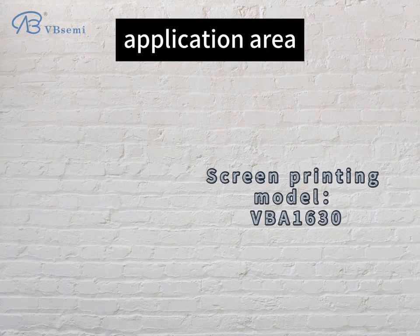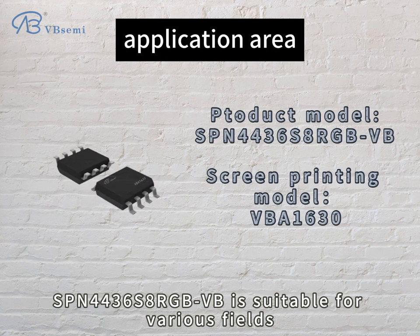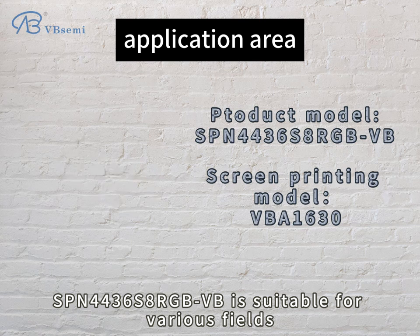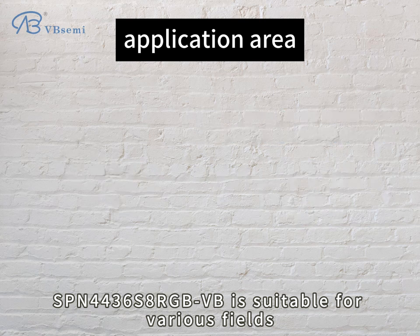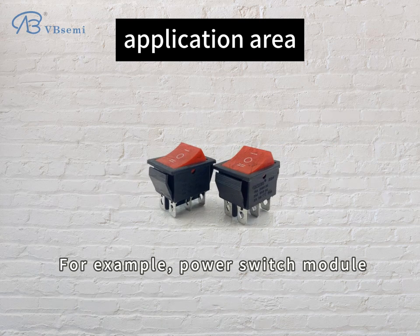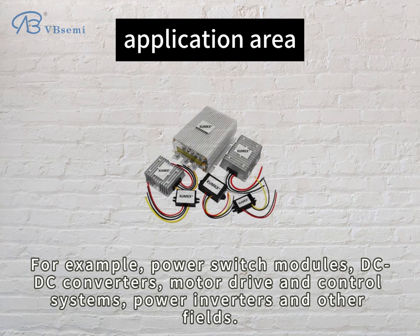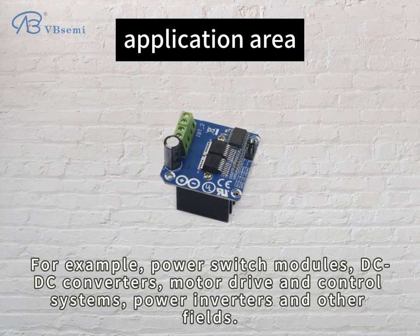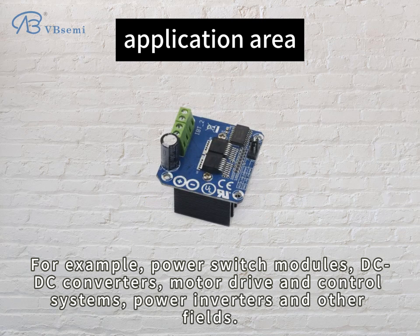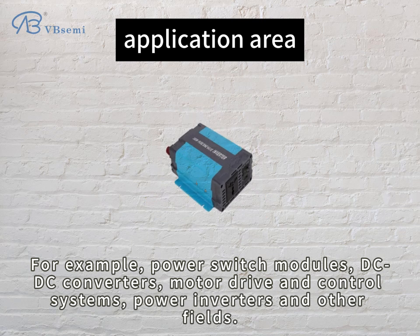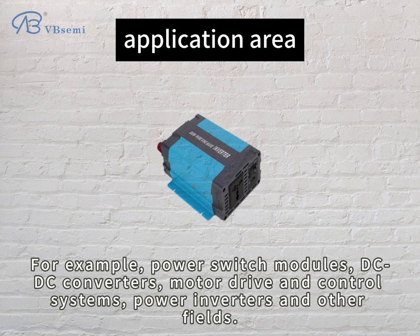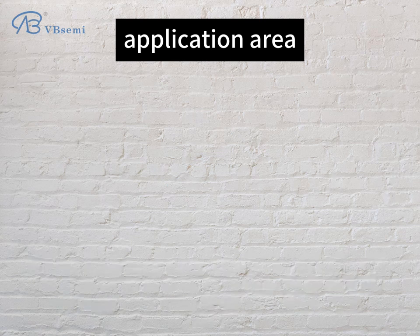Application area: the SPN4436SR RGBVB is suitable for various fields. For example, power switch modules, DC-DC converters, motor drive and control systems, power inverters, and other fields.